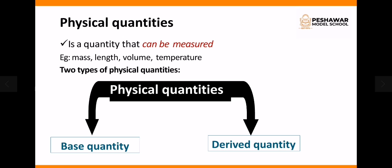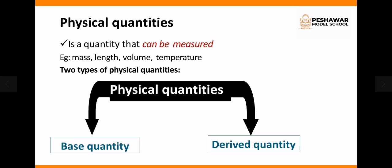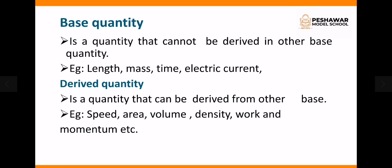Physical quantities have two types: one is base quantities and the other is derived quantities. A base quantity is one that cannot be derived from any other quantity in the world. For example, length, mass, time, and electric current are base quantities.